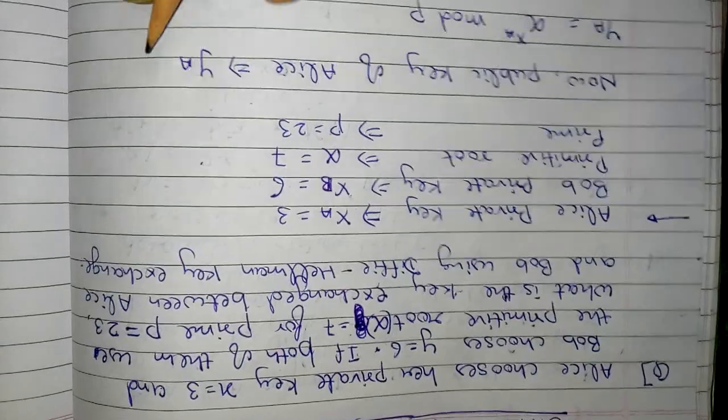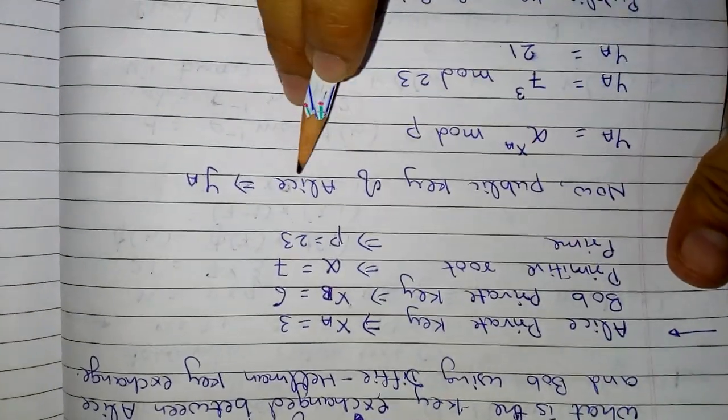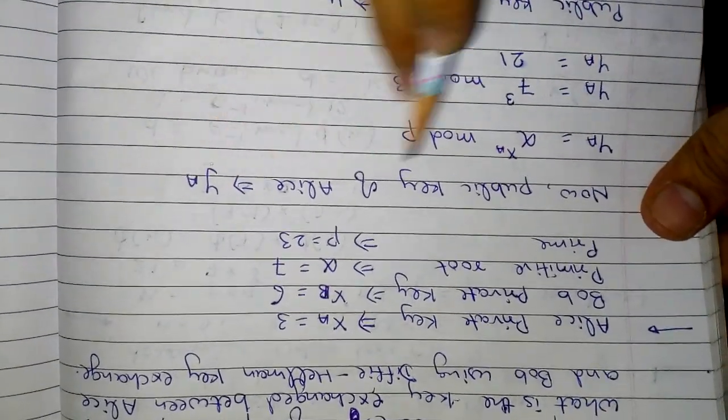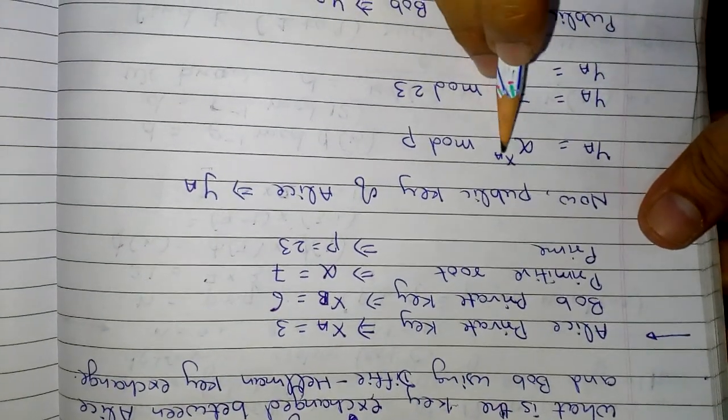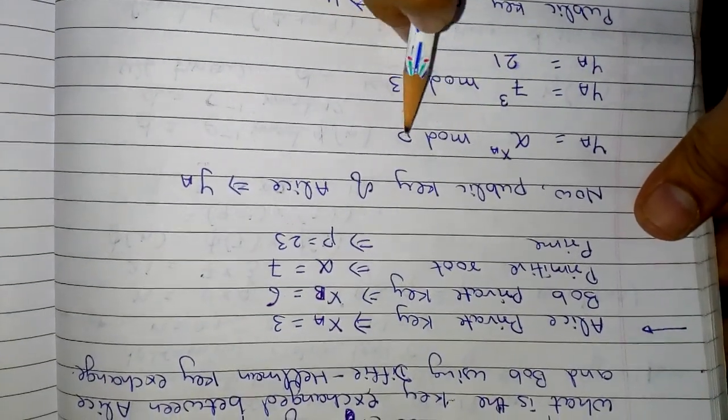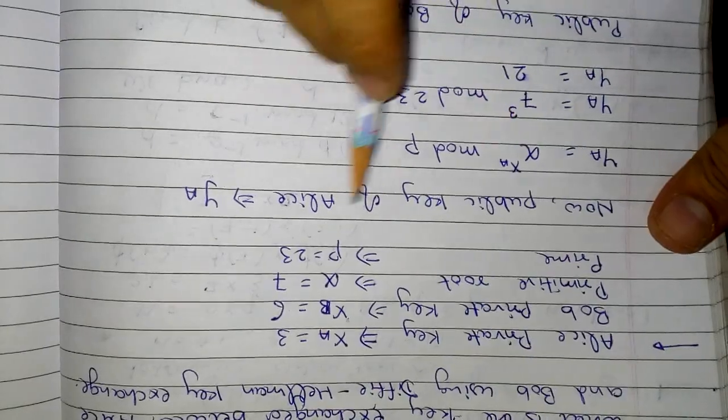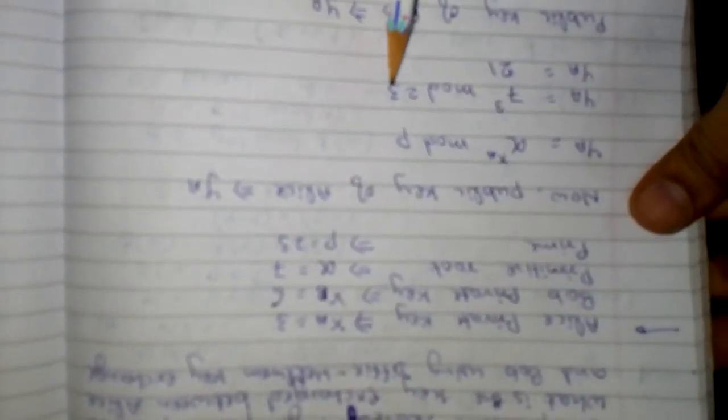Now we have to find the public key of Alice. So public key of Alice, let's call it ya. So ya is alpha raised to xa mod p, which is 7 raised to 3 mod 23. If you find it out in calculator, the answer is 21.